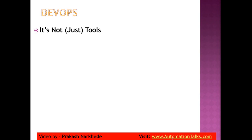DevOps, from the name itself, is Development plus Operations — a combination of those two words. It combines all the qualities, skills, and responsibilities of your development team and your operations team. Testing comes within development itself, because in Agile there is no separate testing team. DevOps is sometimes called technical Agile, because in Agile everyone is expected to be technical.